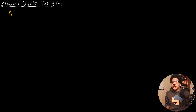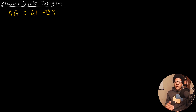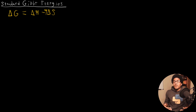In this video, we're going to look at the standard Gibbs energies associated with reactions. We've defined the Gibbs free energy using the following equation: delta G is equal to delta H minus T delta S. We have standard enthalpies and entropies that we've already defined, so the standard Gibbs free energy is just the sum of both of those.